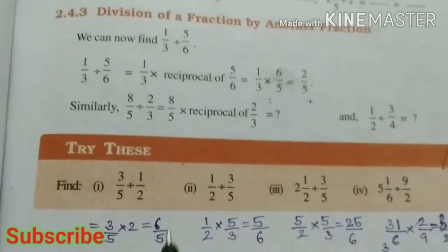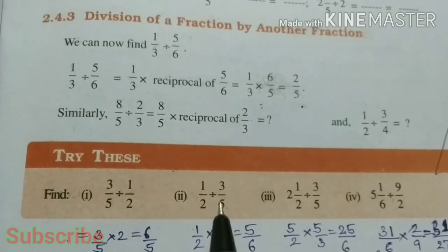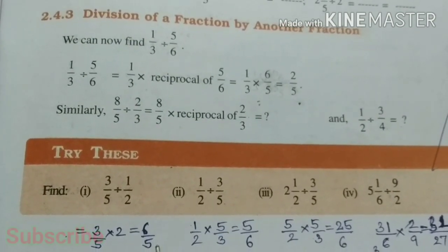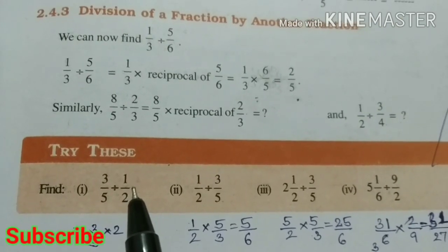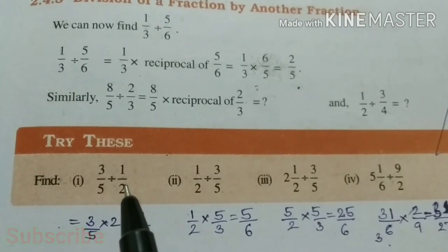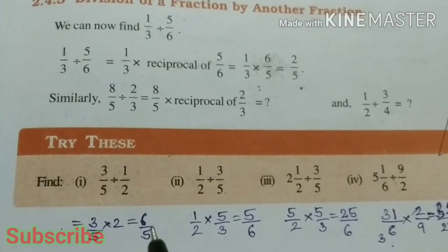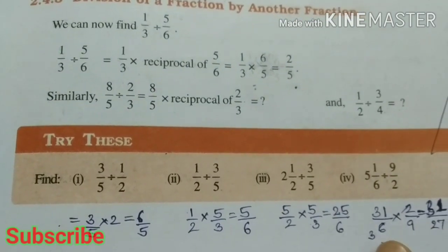Here some questions are given. You can find the answer by multiplying and reciprocating the second fraction. First one, 3/5 × 2 = 6/5. Like this, you can do another one.